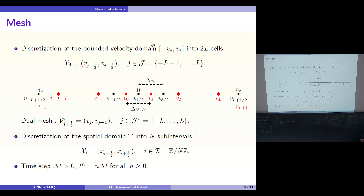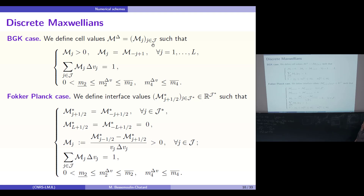We consider a classical discretization of the torus into N subintervals, not necessarily uniform, denoted by x_i, a time step delta t, and time increments t^l. To define the numerical scheme, we first need to define discrete Maxwellians. In the BGK case we only need cell-center approximations M_J. In the Fokker-Planck case, we need both interface approximations and cell-center approximations of the Maxwellian.